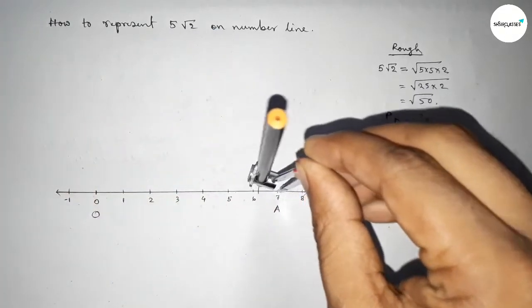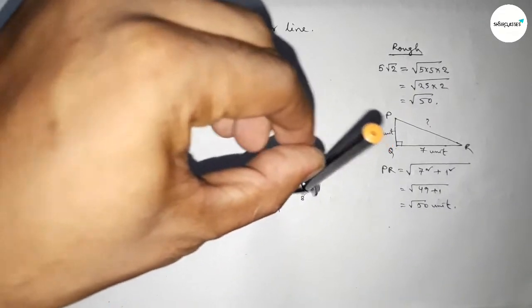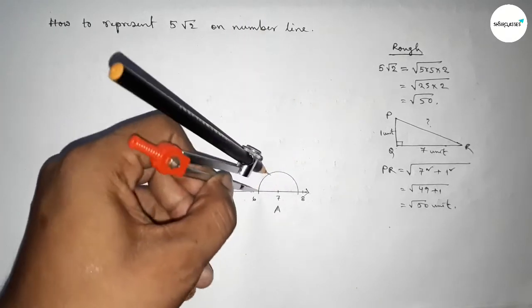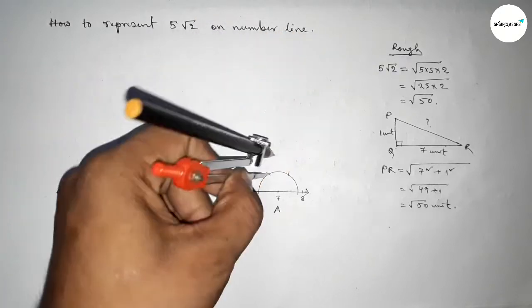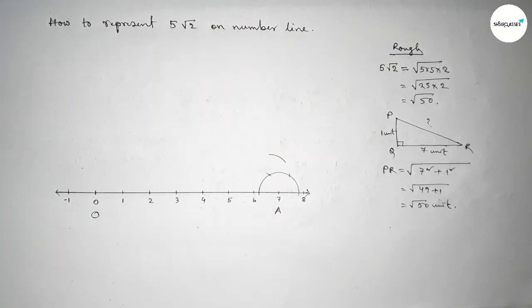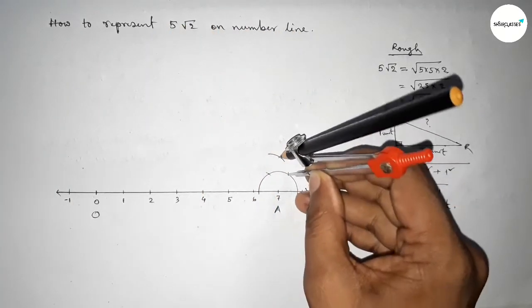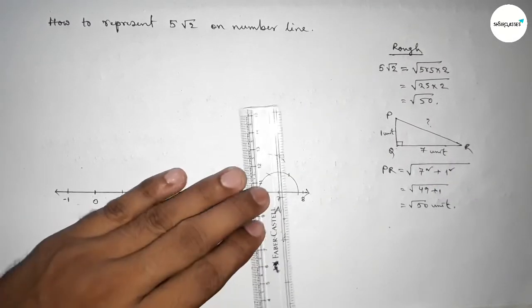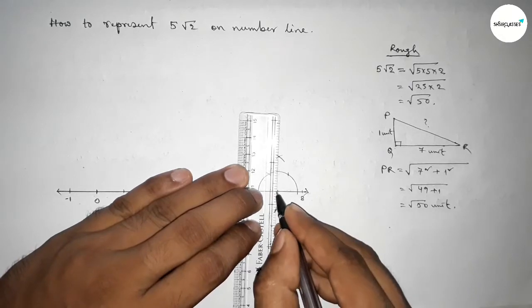First we have to draw a 90-degree angle on the point A. So putting the compass here and taking any length and drawing an arc by this way and taking same length to cut here multiple times. Both the curves intersect at a point. Now joining this line to get here a 90-degree angle.